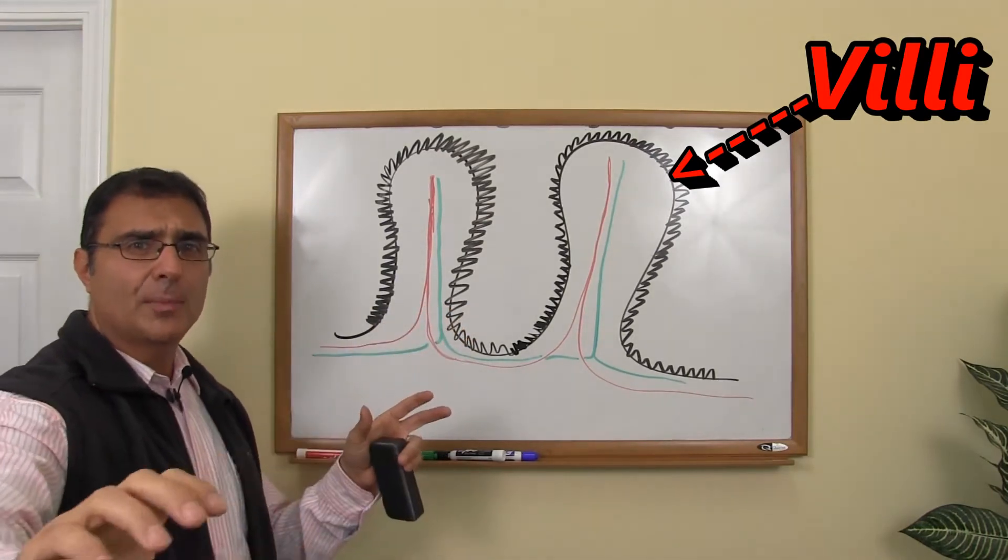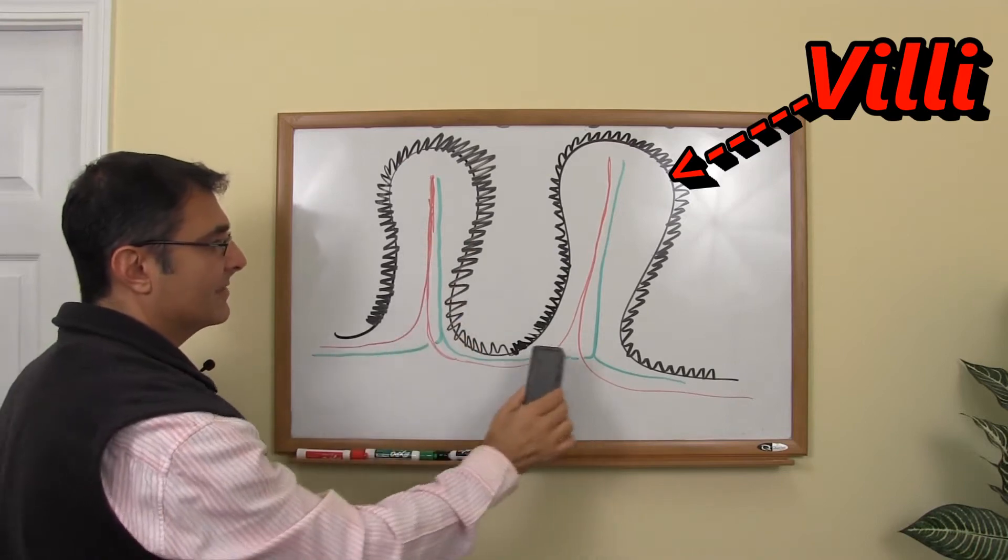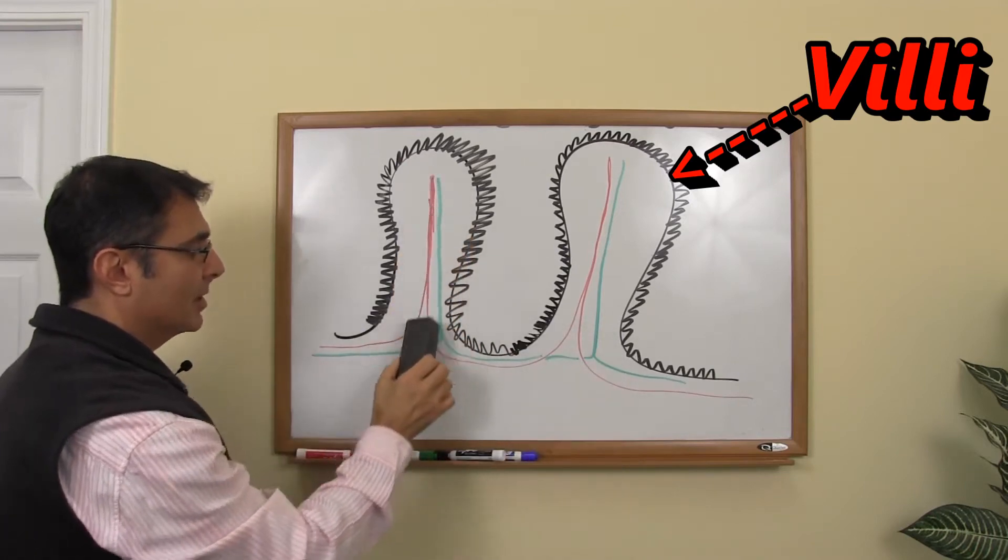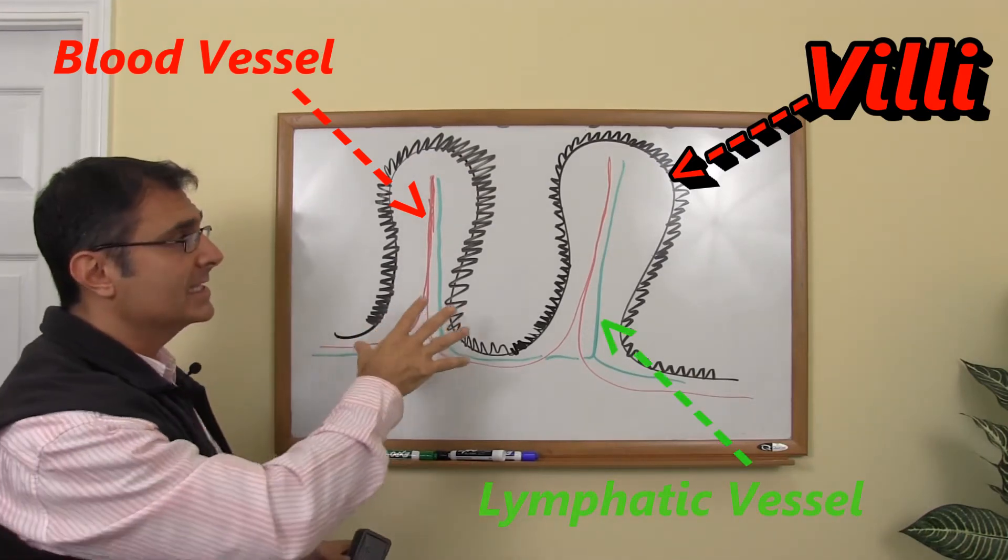Imagine these lining like a good portion of your intestinal tract and inside each one of these villi, you see a blood vessel as well as you see a lymphatic vessel. And that's very important because this is